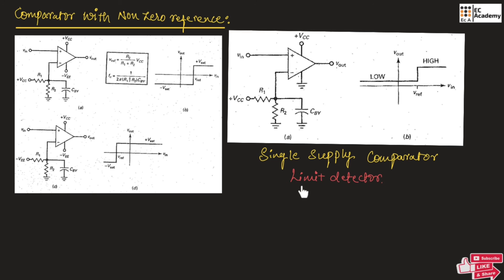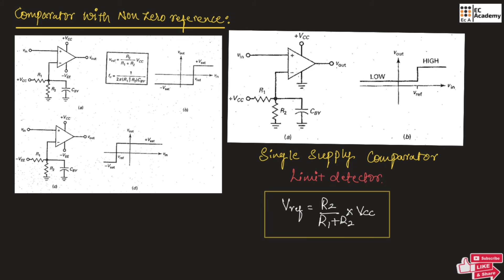This single supply comparator is also known as a limit detector. For this, the reference voltage V reference is equal to R2 divided by R1 plus R2, multiplied by VCC. This is the formula to find V reference. Once we decide V reference, when the input voltage is less than V reference, the output will be low. When the input voltage is greater than V reference, the output will be high.